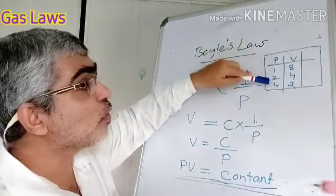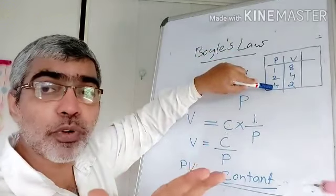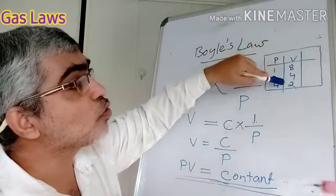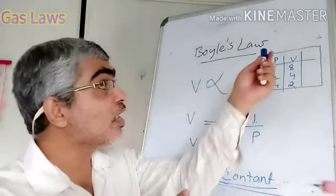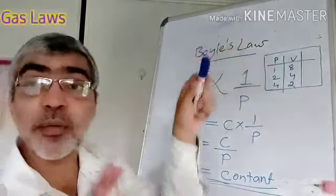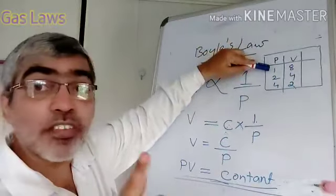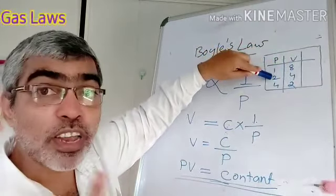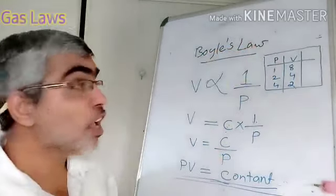Now we add pressure at 4 atm and the volume is 2 liters. In this experiment, we perform three cases with hydrogen gas at zero degrees Celsius, keeping temperature constant throughout.